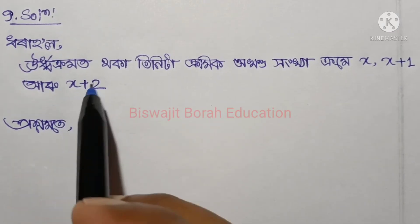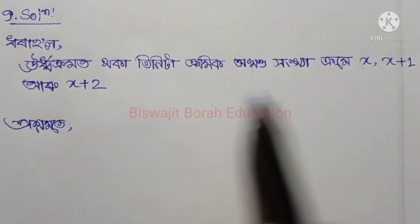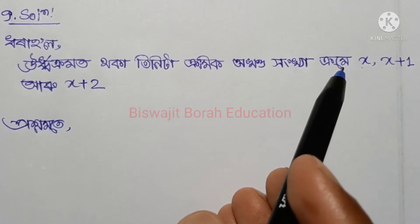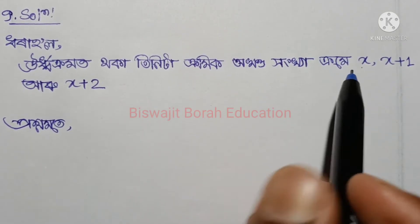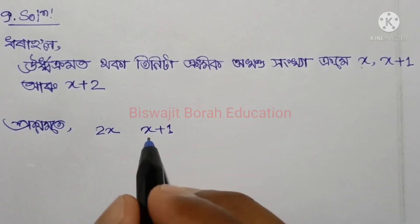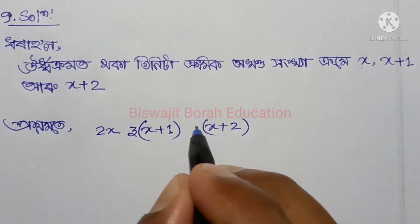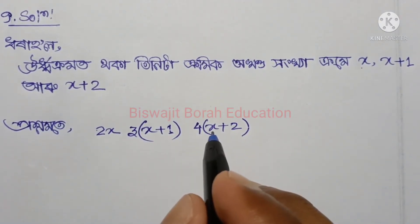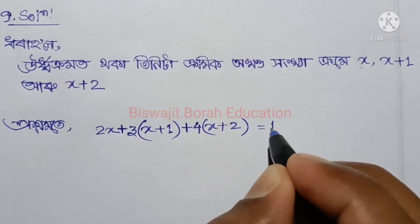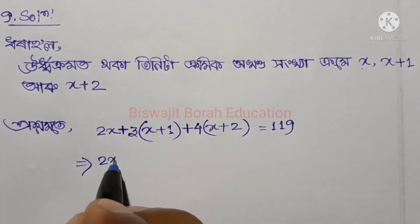ક્રણ ક્દુઈ — two terms. This can be 119. I want you to use twice plus — x equals 3, plus 3, plus 3.